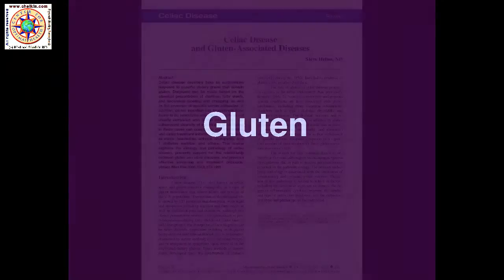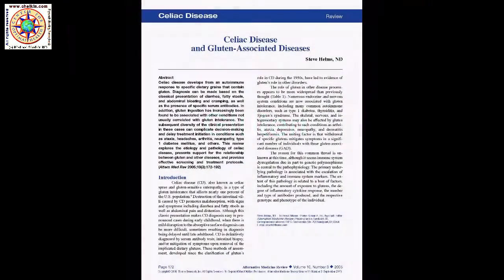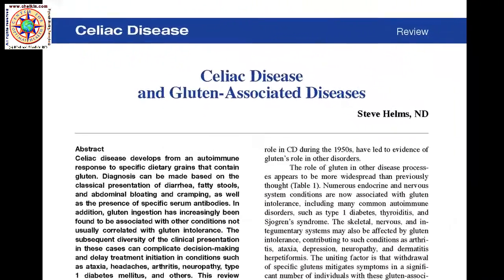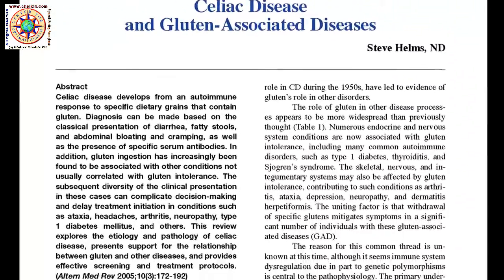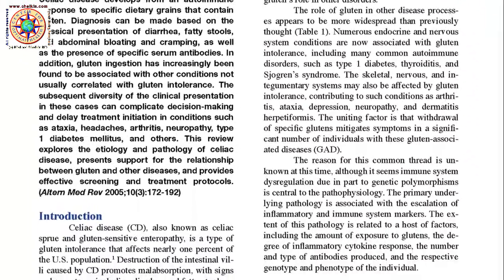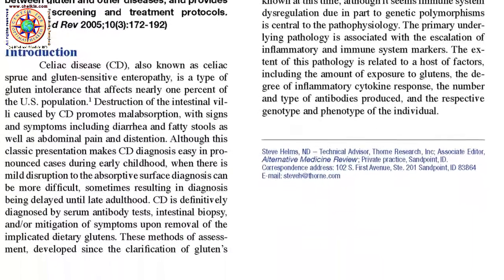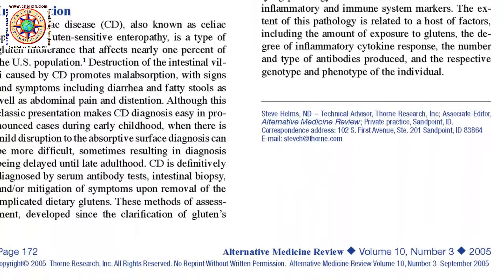In 2005, when this article by Dr. Helms came out in the Alternative Medicine Review, I was alerted to the confusion about gluten and celiac disease. Alternative Medicine Review was a high-quality alternative medicine journal published by the Thorne Company until just recently. Past issues and articles are readily available on the web.